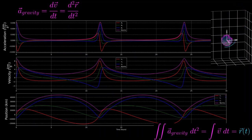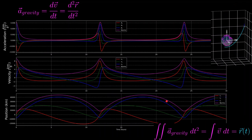We can see the derivative relationships in equation form on the top left between acceleration, velocity, and position, and on the bottom right we see that relationship expressed using integrals. In this video, we'll be going over in detail the relationships between acceleration, velocity, and position, which will be extremely important for when we implement these differential equations into Python and solve them using numerical integrators, which is how all the animations and plots are made for these videos.